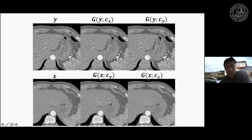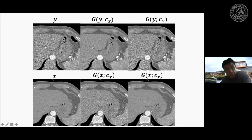For example: given a noisy input image y and the denoising code for the clean domain, the generator produces a denoised image. If you provide a noisy code instead, the generator outputs an image with noise added. Conversely, given a high-dose image with a noisy code, it generates noise; with the noiseless code it reproduces the clean image. By simply switching the code, one trained generator performs both forward and inverse operations. At inference, you only need the generator and the clean code — from low-dose input images, you generate high-dose images.